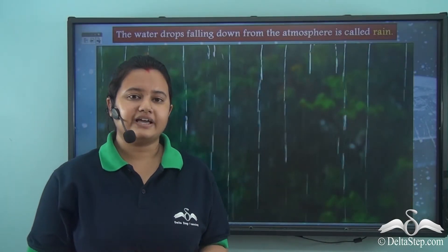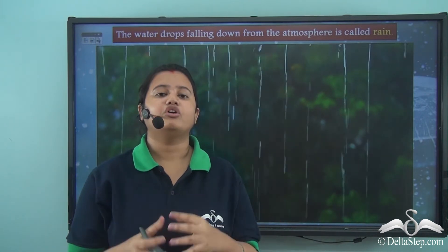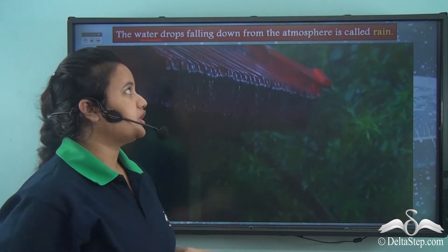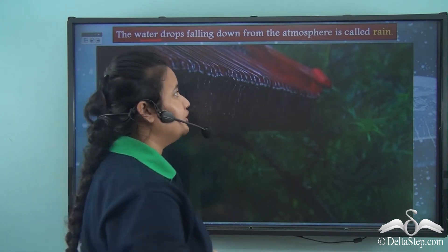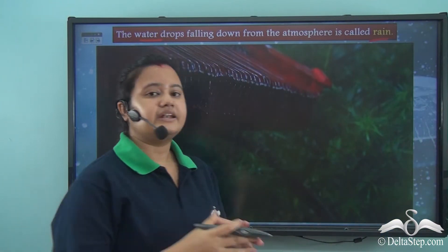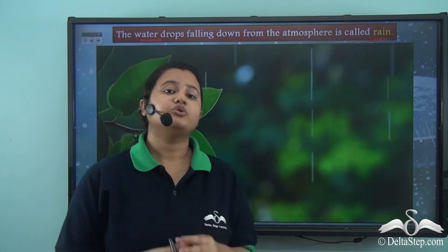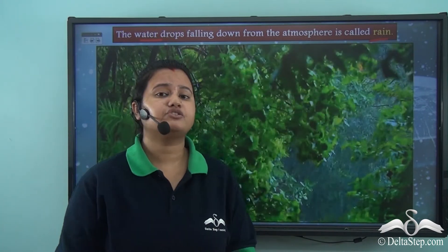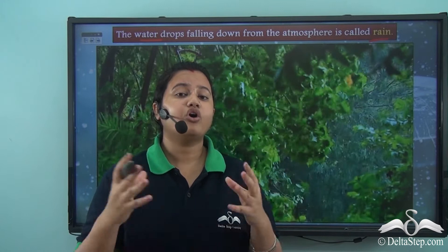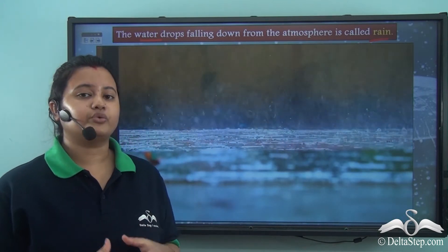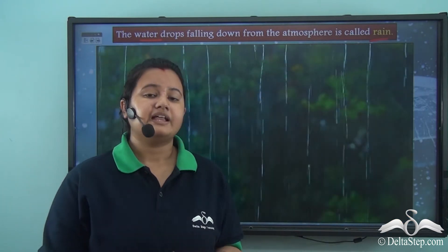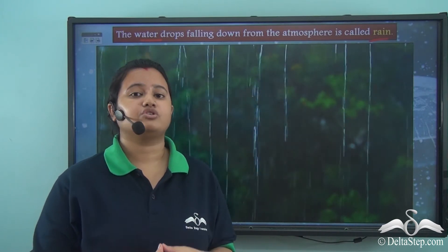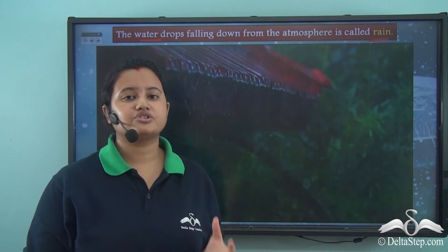So now let's understand the meaning of rain. In the process of the water cycle, water falls onto the earth's surface in the form of water drops. These water drops falling onto the earth's surface from the atmosphere are called rain. The diameter of raindrops may vary from 0.5 mm to 6.35 mm. Rain is an integral part of human lives and of all living beings. Agriculture, that is the art of growing crops, is dependent on rain. Rain is the natural supplier of fresh water on earth, apart from surface water bodies like oceans and seas.